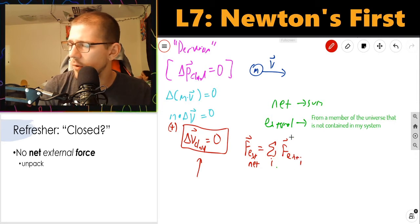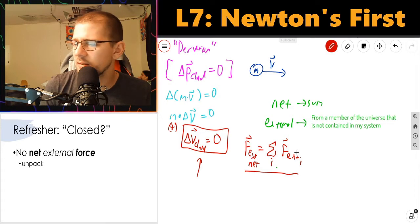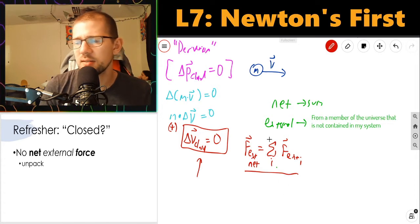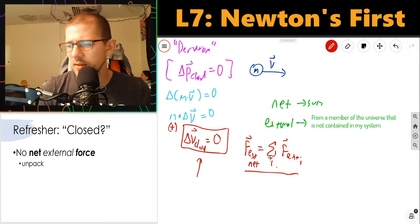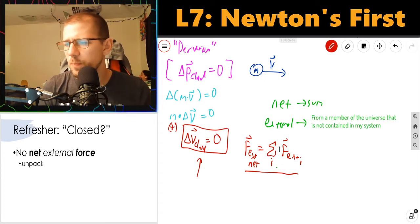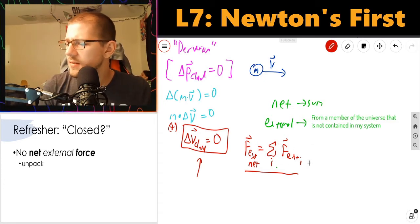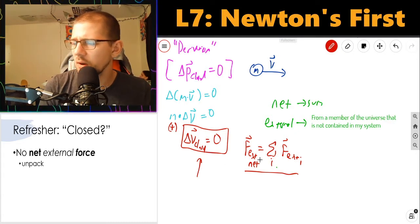So I'm summing over all external forces. I'm going to underline this equation. It's not as important as the boxed equations. This is just saying the way that you have external net forces is when the external forces individually sum to a non-zero vector. When this is zero, this no change in velocity holds.